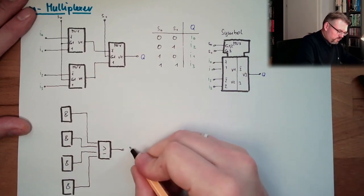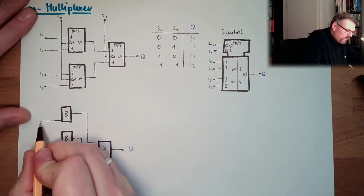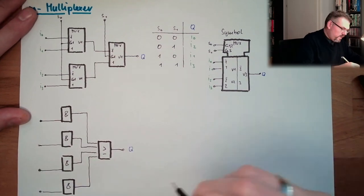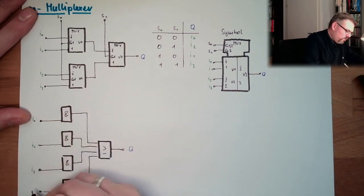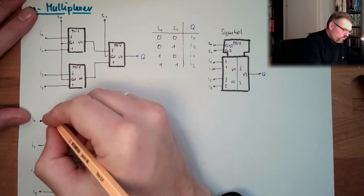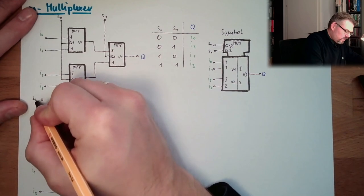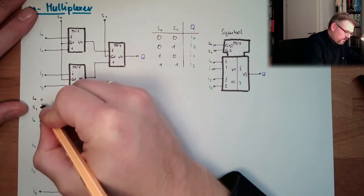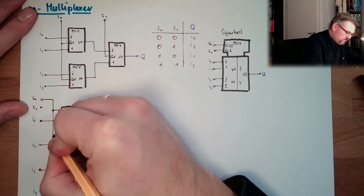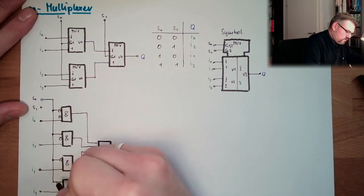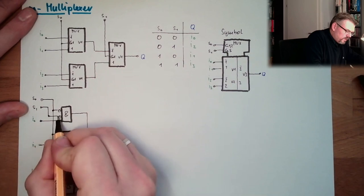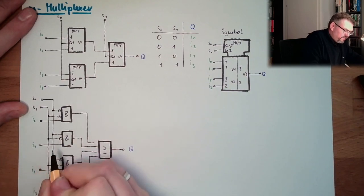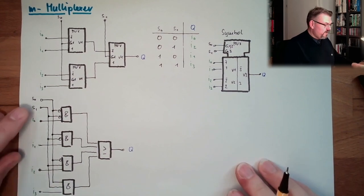We have bigger AND blocks, two blocks to one OR block. This here would be the output Q. We have here at every end, we have an input. So we have the inputs I0, I1, I2 and I3. And we have two selection lines, S0 and S1. And we make it like that, that S0 is connected like that, S1 is connected like that. So that we have enough AND blocks for every possible combination of S0 and S1.